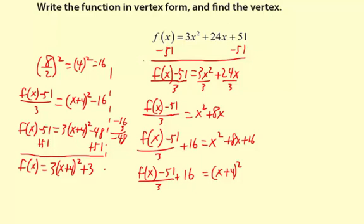Finding the vertex, that's easy now. It's just negative 4, 3. And you read that from the vertex form.